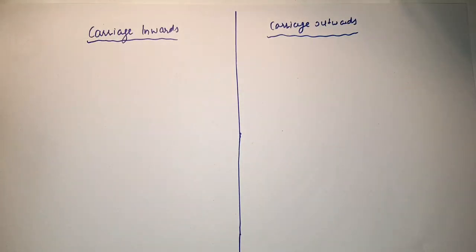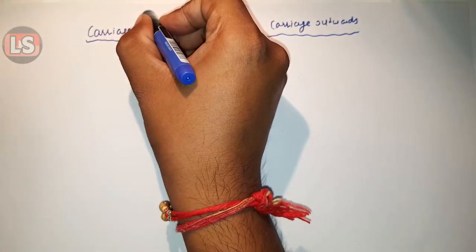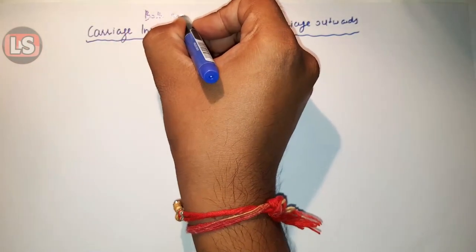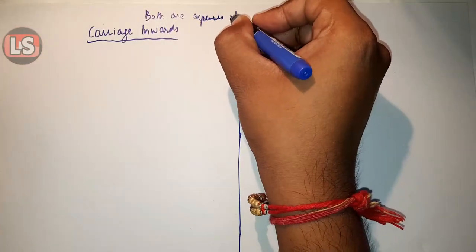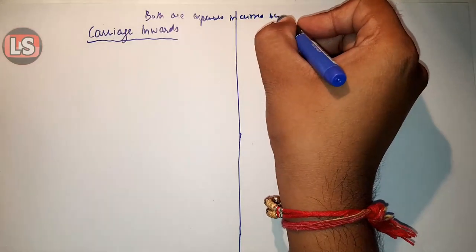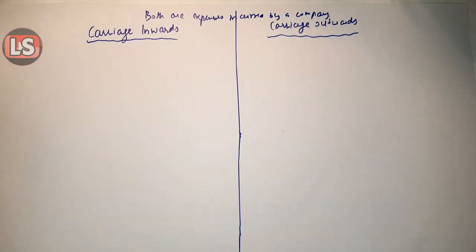Hello friends, welcome to Learning Sessions. Today in this video tutorial we will learn about the difference between carriage inwards and carriage outwards. Basically, carriage inwards and carriage outwards are both expenses incurred by a company.